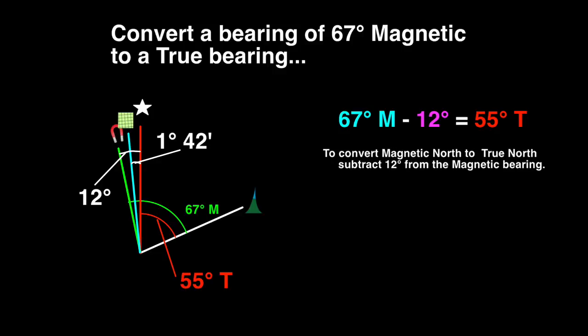To convert magnetic north to true north, subtract 12 degrees from the magnetic bearing. To convert true north to magnetic north, add 12 degrees to the true bearing.